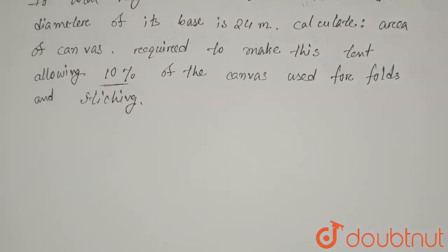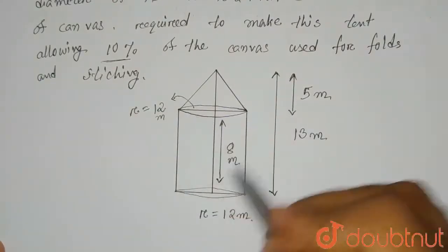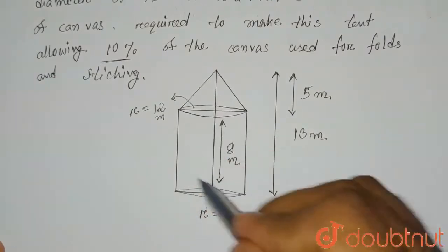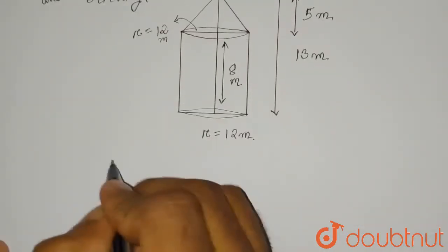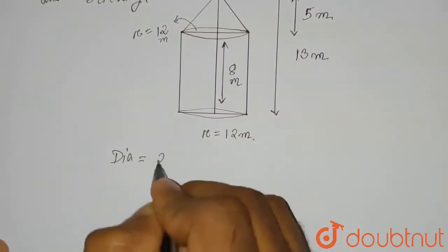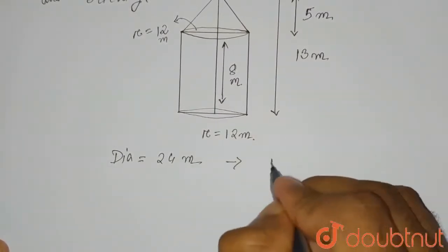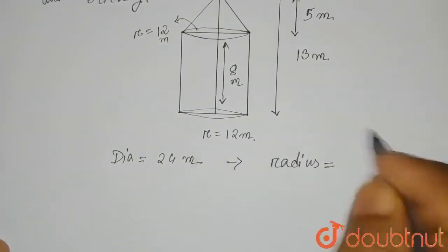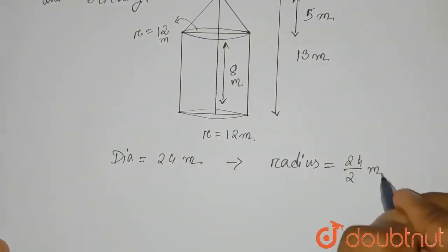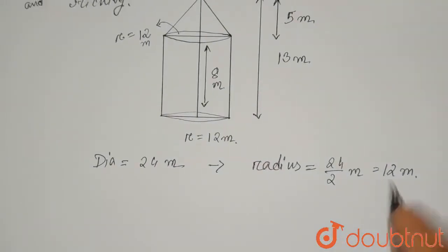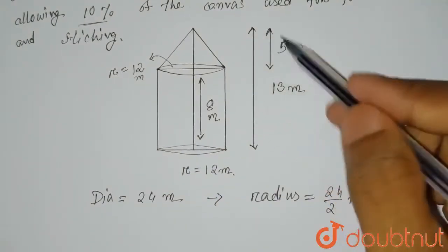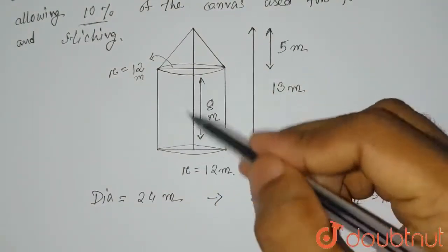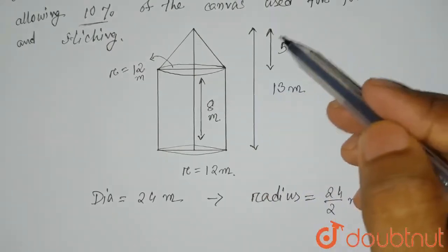Let's draw the diagram of this question. We can see the cylindrical part which has a height of 8 meters and a radius of 12 meters. Since the diameter is given as 24 meters, the radius will be 24 divided by 2, which equals 12 meters. The total height of the tent is 13 meters and the cylindrical part has a height of 8 meters, so the conical part has a height of 5 meters.